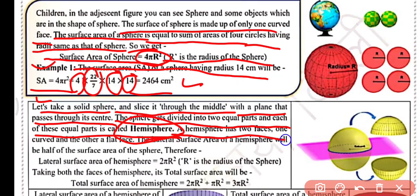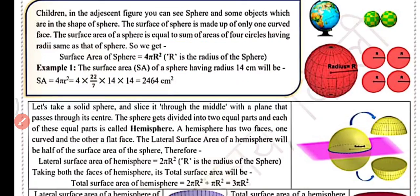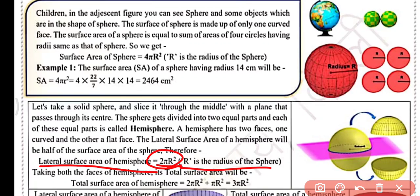A hemisphere has two faces: one is the curved face and the other is the flat face. The lateral surface area, or curved surface area, of a hemisphere equals half the surface area of the sphere, which is 2πr², where r is the radius. For the total surface area, taking both faces: TSA = 2πr² + πr² = 3πr², where πr² is the area of the flat circular face.